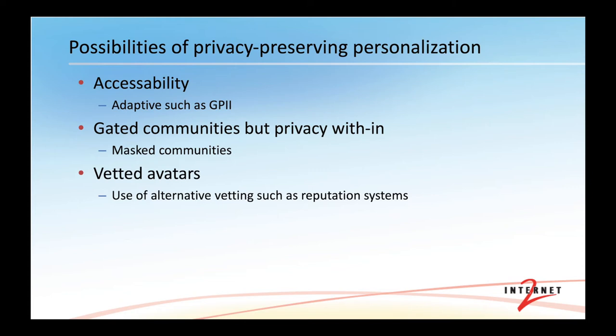All of those things can be managed using privacy-preserving approaches. There are many use cases around having a gated community where only certain members of the general public can get in, but once you're in, you're privacy-preserved, as if you were wearing a mask in the old definition of masks over the eyes. And finally, there are many places — role-playing games, et cetera — where using vetted avatars to preserve privacy but offer continuity of the user, and those can allow other kinds of identity vetting, such as reputation systems.